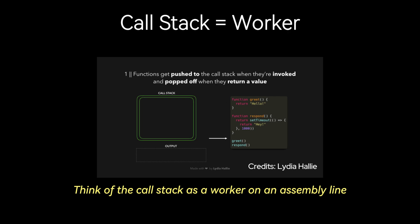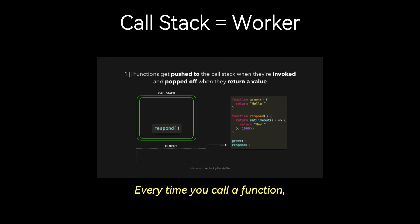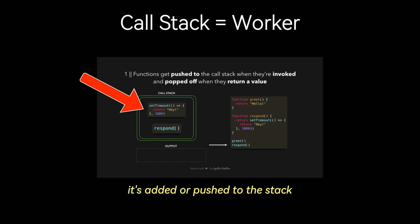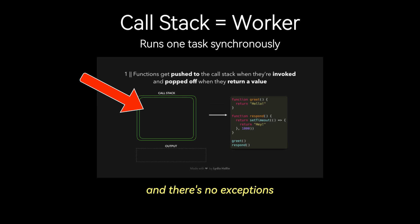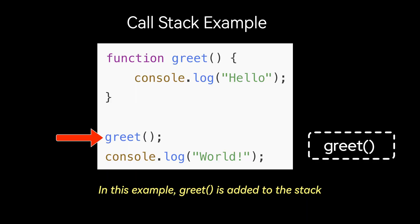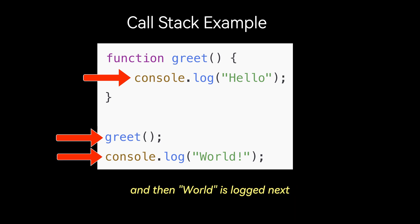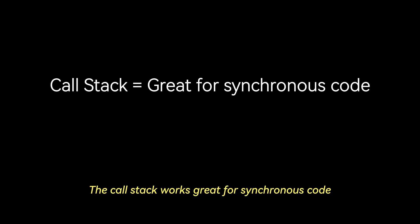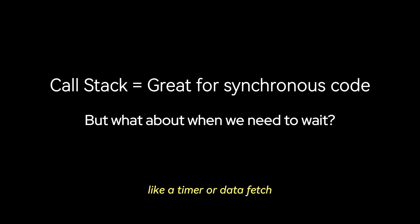Think of the call stack as a worker on an assembly line. It takes tasks, completes them, and moves on to the next one. Every time you call a function, it's added or pushed to the stack. The stack can only run one task at a time, with no exceptions. In this example, greet is added to the stack, hello gets logged, greet is removed from the stack, and then world is logged next. The call stack works great for synchronous code, but what happens if we need to wait for something, like a timer or data fetch?